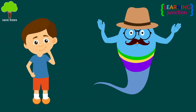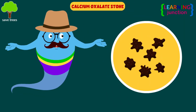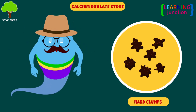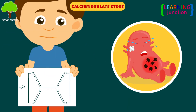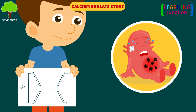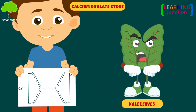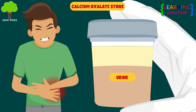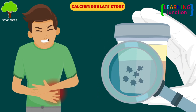There are many types of kidney stones. The most common type is the calcium oxalate stone — hard clumps of minerals and other substances that form in the kidneys. These crystals are made from oxalate, a substance found in foods like green leafy vegetables, combined with calcium. Having too much oxalate or too little urine can cause the oxalate to crystallize and clump together into stones.